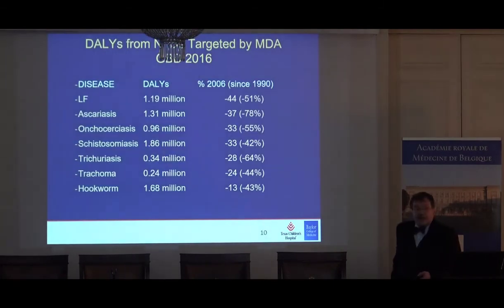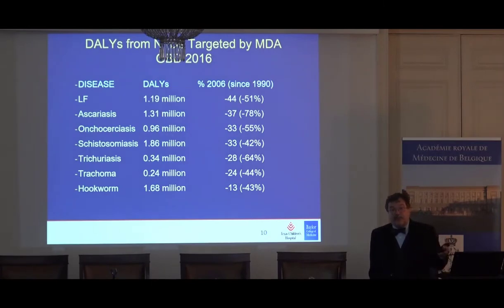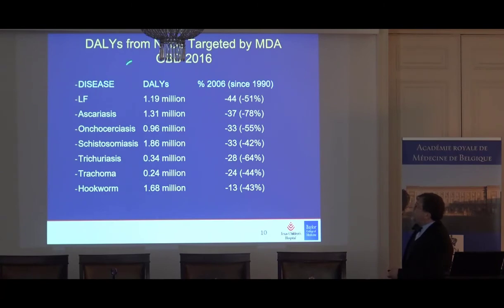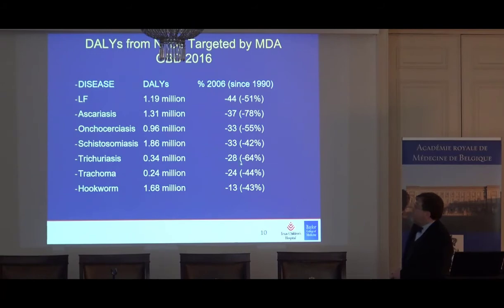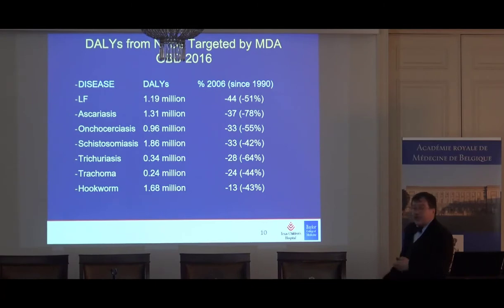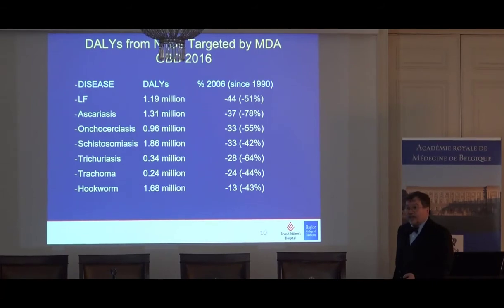The result, according to the World Health Organization, is that we've treated more than 1 billion people with this package. A new paper in PLOS NTDs shows we've now achieved between a 25% and 44% reduction in both the prevalence and disability of these infections — measured in disability-adjusted life years. We're starting to make an impact to the point where we can talk about eliminating some of these diseases as a public health problem.